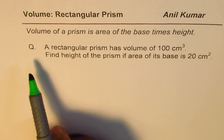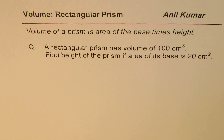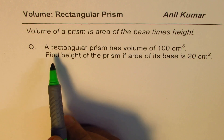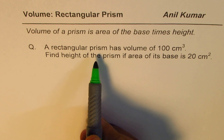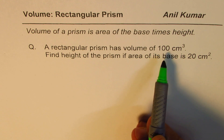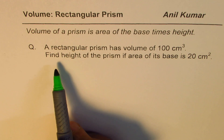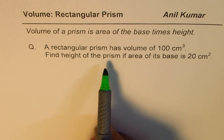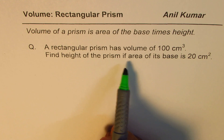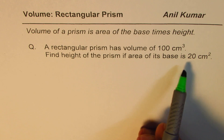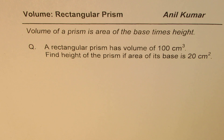Based on that, here is a question for you. A rectangular prism has a volume of 100 cm cubed. Find the height of the prism if the area of its base is 20 cm squared. You can pause the video, answer the question, and then look into my suggestion.